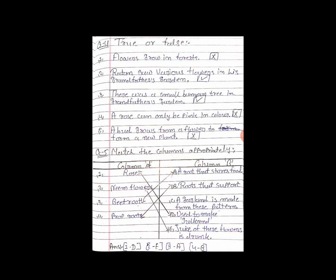Box draw karna hai har ek sentence ke peeche. Theek hai? Toh true and false kaise likhoge? Flowers grow in forest — sahi baat? No, it is false. So square sign in the box. Theek hai? Kar liya? Very good.